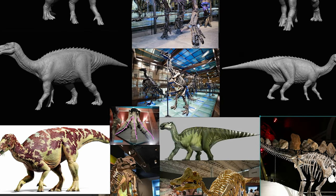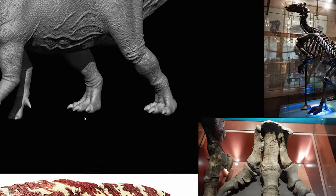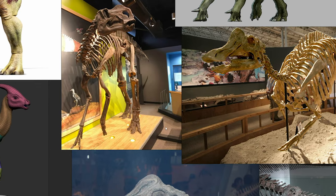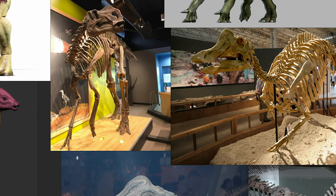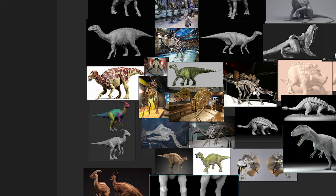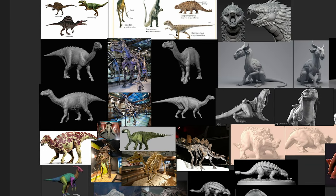Pay attention to the structure of the legs of the iguanodon. We see pointed claws and the texture of the skin on the fingers. The structure of the limbs of the neposars doesn't differ much from the iguanodon, but they look a little more graceful. I will leave both examples to see the whole picture. We'll make something in between and in a different style.